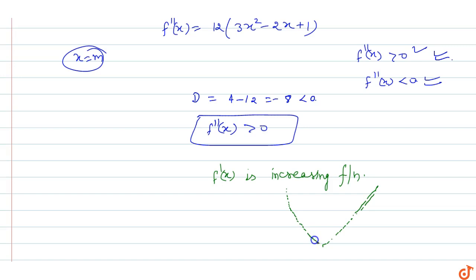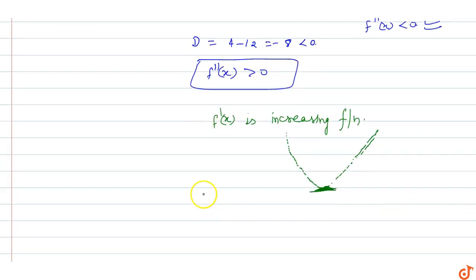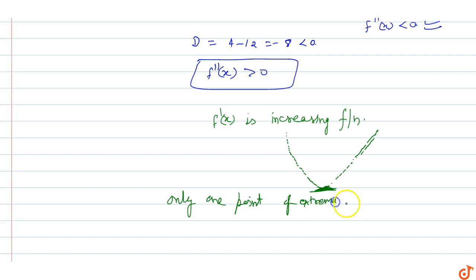Since D less than zero, f''(x) is always positive, meaning f(x) has only one minimum — only one point of extremum, which is a minima.